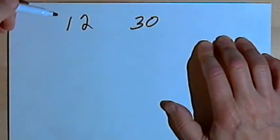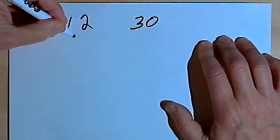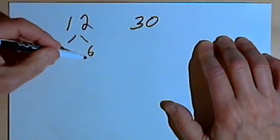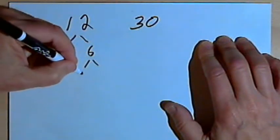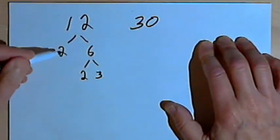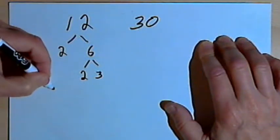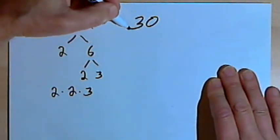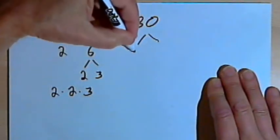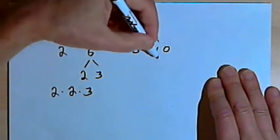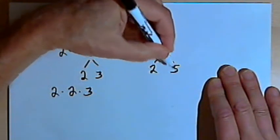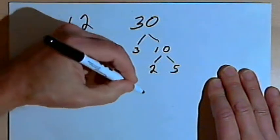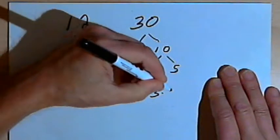I'm going to find the prime factorization for each of the numbers. For 12, I can factor that down into a 2 and a 6. 2 is a prime number, but 6 is not, so I want to divide that 6 down into 2 and 3. Now I've got primes at the end of each branch, so the prime factorization for 12 is 2 times 2 times 3. For 30, that's 3 times 10, and then 10 is 2 times 5. So the prime factorization for 30 is 2 times 3 times 5.